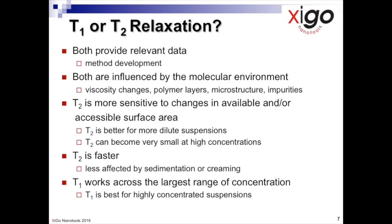For example, T2 can be more sensitive than T1 to the presence of elemental impurities, especially ferromagnetic iron and paramagnetic species, for example, alumina, cobalt, copper, manganese. T2 is also more sensitive to changes in available and/or accessible surface area.